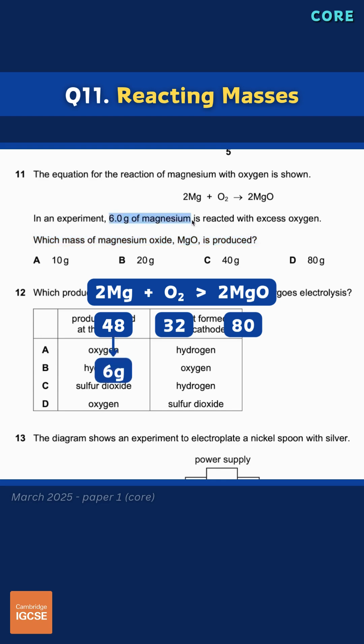6 grams of magnesium was used in the reaction. 48 divided by 6 equals 8, so all we need to do is divide 80 by 8, which gives us 10 grams of magnesium oxide.